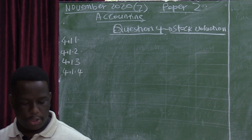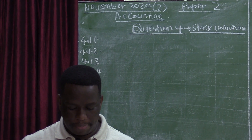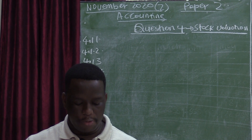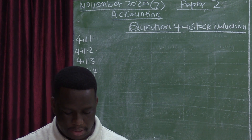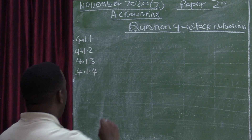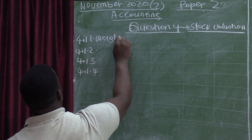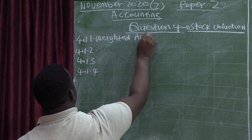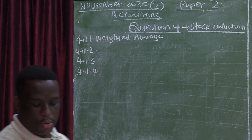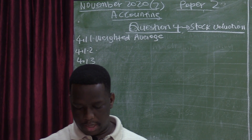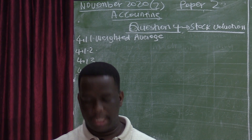4.1.1: the method most suitable for inexpensive goods purchased regularly. The answer to that is the weighted average. Weighted average is more appropriate for a business that is selling inexpensive goods which are purchased regularly.